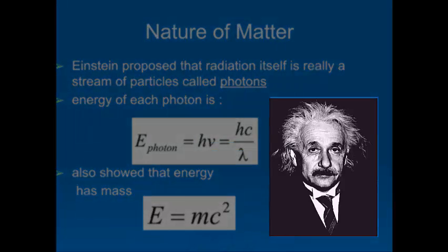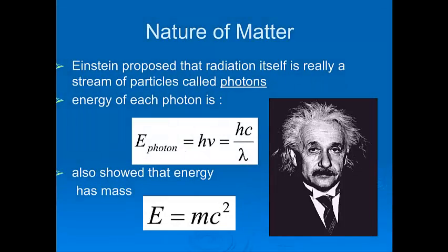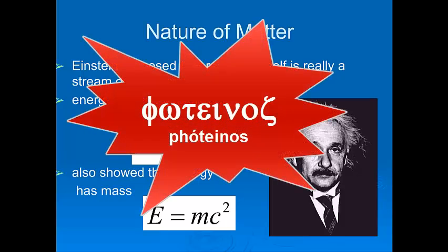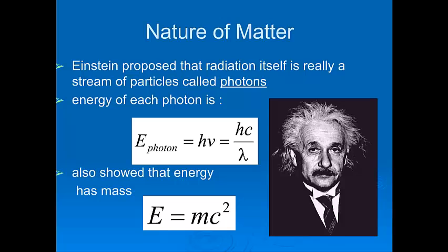You may recognize this guy with the wild hair. That's Albert Einstein. And Einstein took it to the next level. He said radiation, energy itself, is really just particles. And he called those particles photons, from the Greek word for light. Since we know the energy of a photon is equivalent to h times nu, Planck's constant times frequency, which is the same as h times c over lambda, we just saw that in the previous slide, we have a relationship now between waves and particles. And Einstein went further with his theory of relativity, and he showed that energy actually has mass by that very famous equation, E equals mc squared.